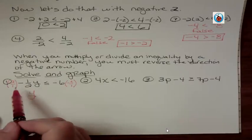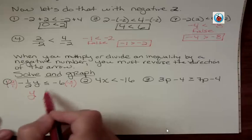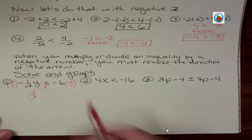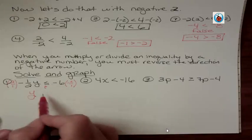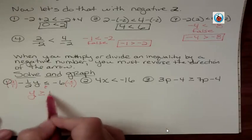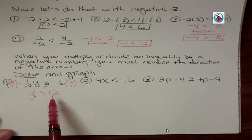But because I multiplied by a negative, I'm going to have to reverse the direction of the arrow. And I'm going to draw a little flippy sign to show I flipped it. It was less than or equal to, now it's going to be greater than or equal to positive 12. Notice that my answer was positive. It has nothing to do with the answer. It has to do with what we multiplied by.